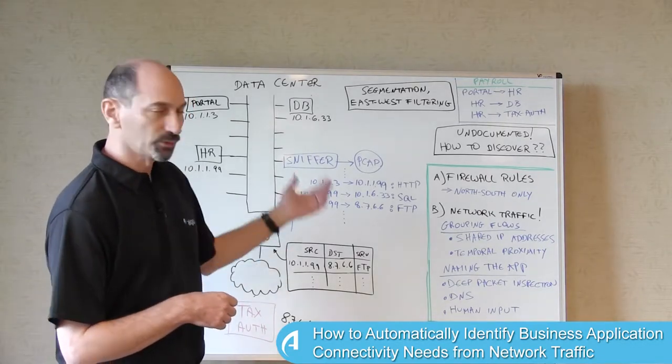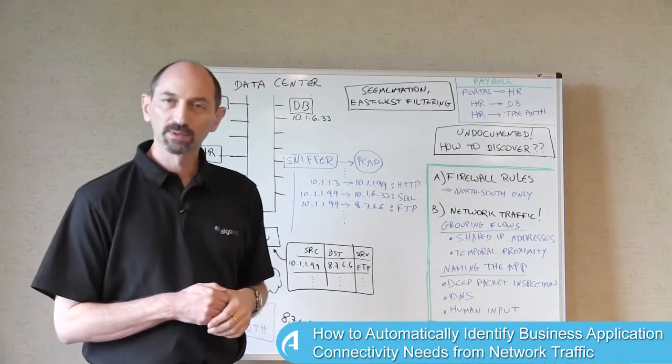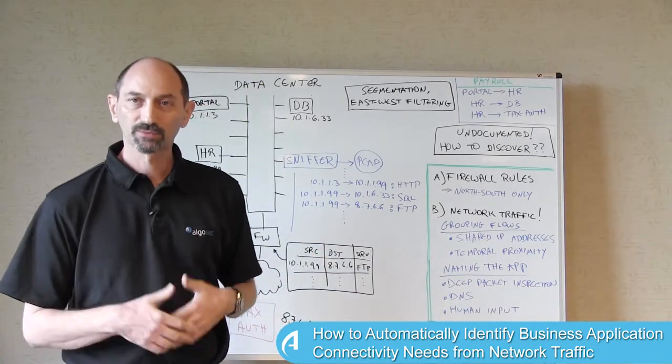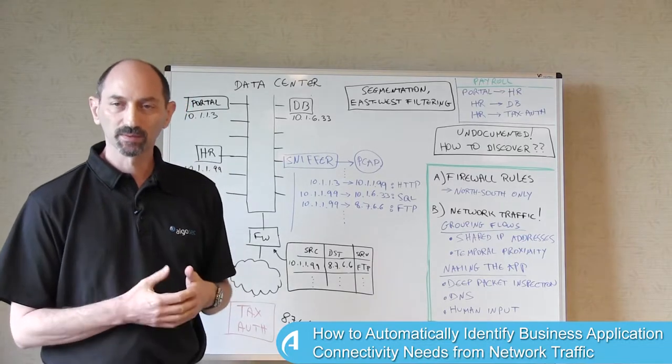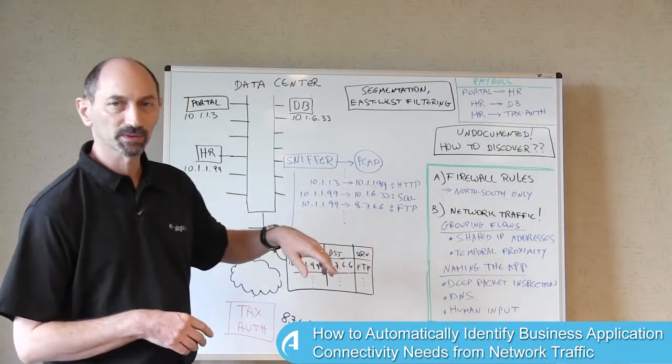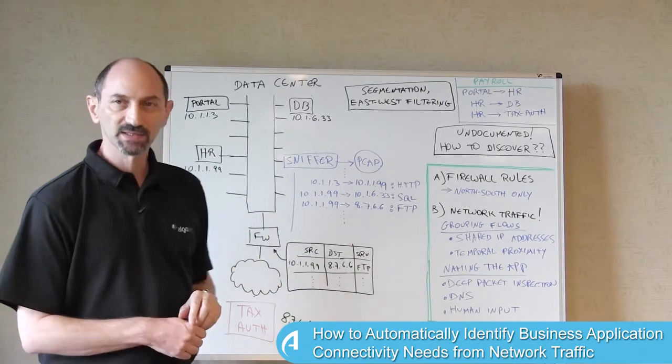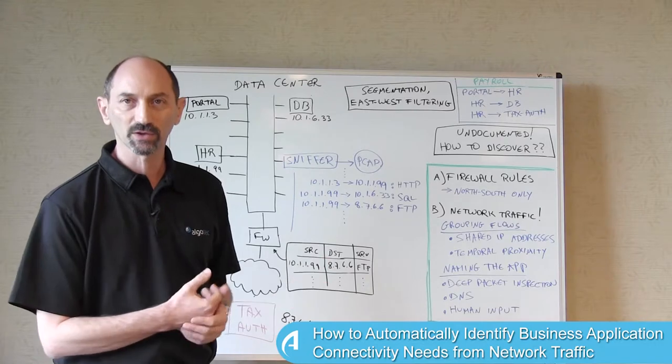And after you've done all of this technical homework, you can always go to the humans and ask them. If you give them enough clues, they'll be able to complete the picture. So for instance, you found a shared IP address that appeared multiple times. You've done DNS lookup and you've discovered that this system is actually called the HR server.